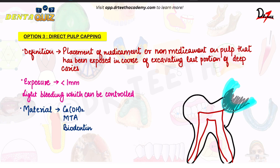When you excavate down to the last part, you find that the pulp has been exposed. What you do is place a medicament or a non-medicament here in direct contact with the pulp. This is why it is known as direct pulp capping — placing a medicament in contact with the pulp helps in the healing of the pulp.